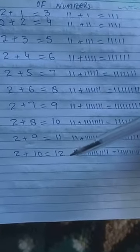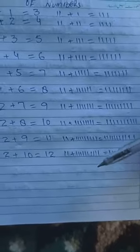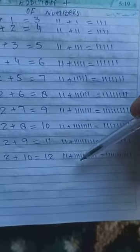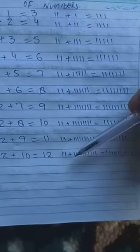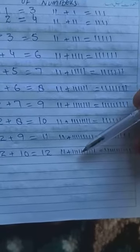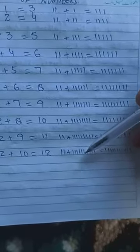Two plus ten, two plus ten equal to twelve. Two lines plus ten lines: one, two, three, four, five, six, seven, eight, nine, ten lines.